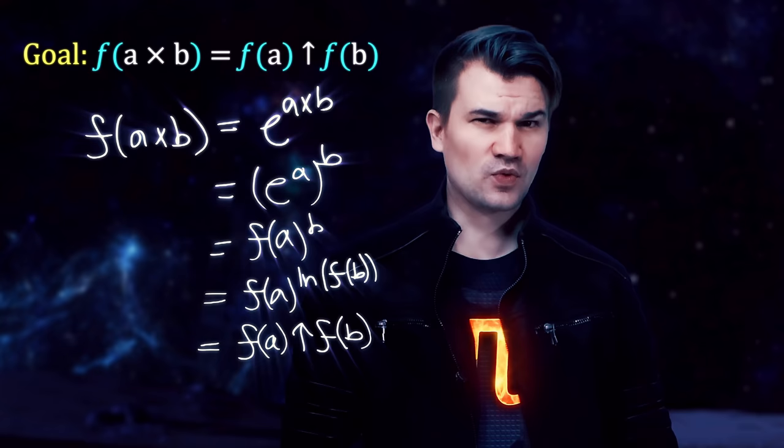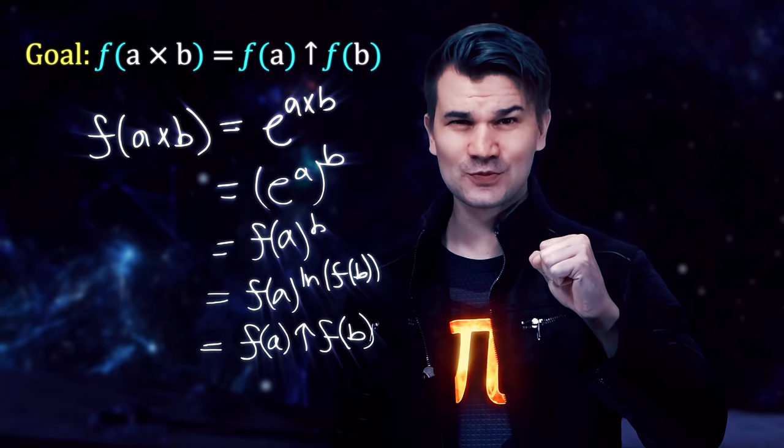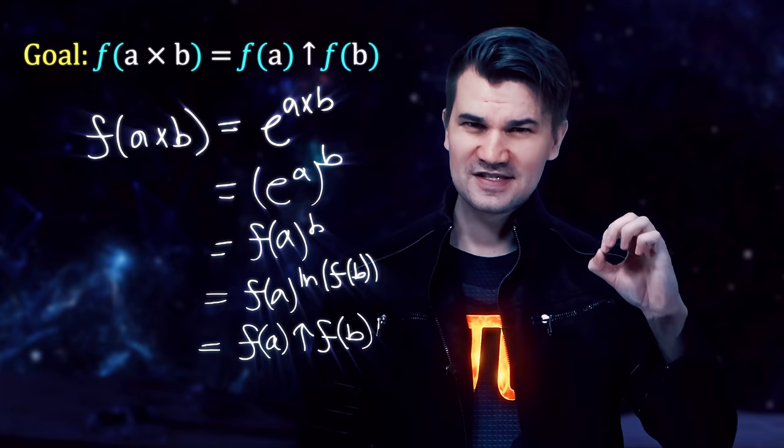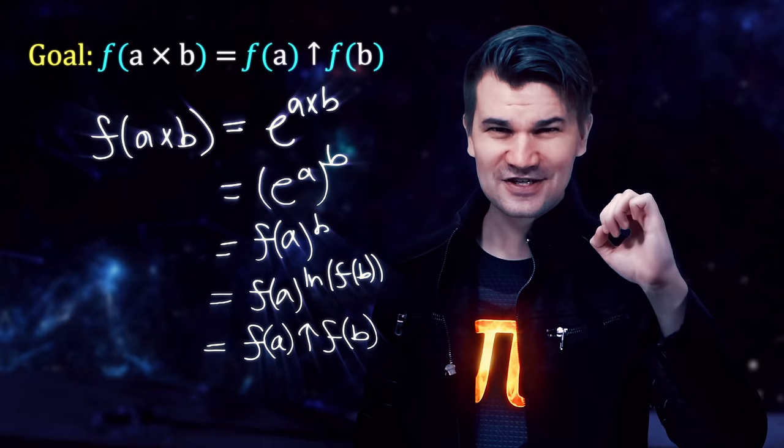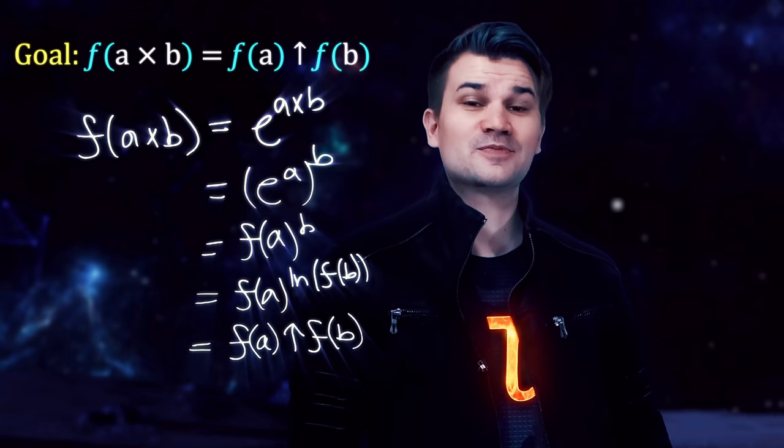That means that the field of real numbers with addition and multiplication is isomorphic to the field of positive real numbers with multiplication and power log. This means that the algebraic relationship between addition and multiplication is perfectly preserved when we go to multiplication and power log. This suggests that power log really is the next tier up from multiplication in a deep algebraic sense, which makes exponentiation a false prophet.